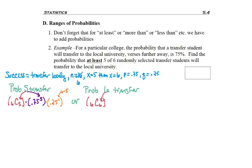I want all six to transfer. The probability of success is still 75%, but now it's to the sixth power because we're looking for six successes. Failure is going to be to the zero power. If all six transfer locally, then none of them are going to transfer far away. So even though the p and the q stay the same and n stays the same, x changed based on which probability I was looking for.